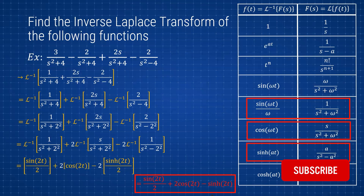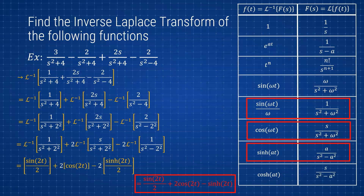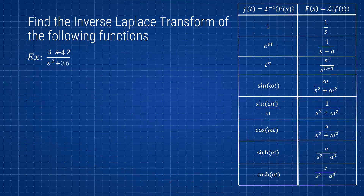The process is pretty straightforward and easy to follow. For our last problem we have: (3s − 42)/(s² + 36).